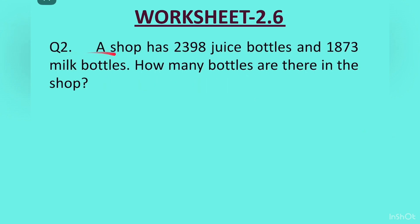Question 1. A shop has 2398 juice bottles and 1873 milk bottles. How many bottles are there in the shop?